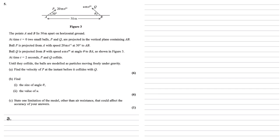The points A and B lie 50 metres apart on horizontal ground. At time t equals zero, two small balls P and Q are projected in the vertical plane containing AB. Ball P is projected from A with speed 20 metres per second at 30 degrees to AB, and ball Q is projected from B with speed U metres per second at angle theta to BA, as shown in figure three. At time t equals two seconds, P and Q collide. Until they collide, the balls are modelled as particles moving freely under gravity.